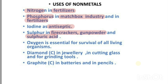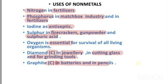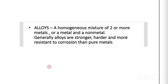Sulfur is used in making firecrackers, gunpowder, and sulfuric acid used in laboratories. Oxygen is essential for all living organisms. Diamond, which is a form of carbon, is used in making jewelry, in cutting glass — as it is the hardest known substance — and in grinding tools. Graphite, another form of carbon and a good conductor of electricity, is used in making batteries and pencils, as it leaves a dark mark on paper.